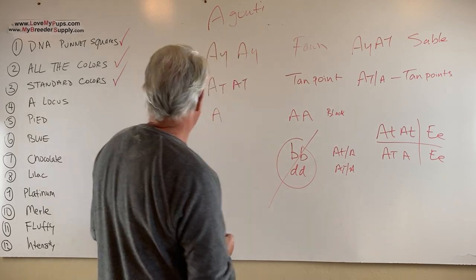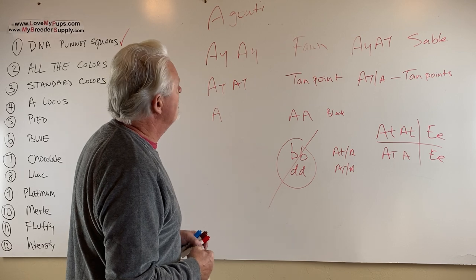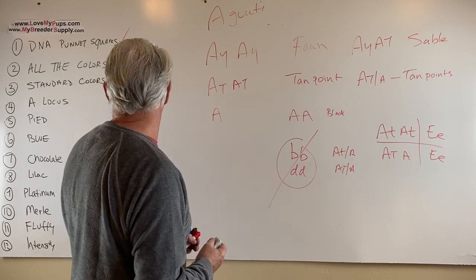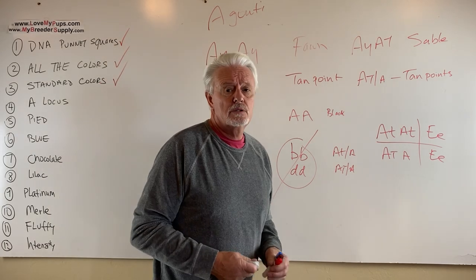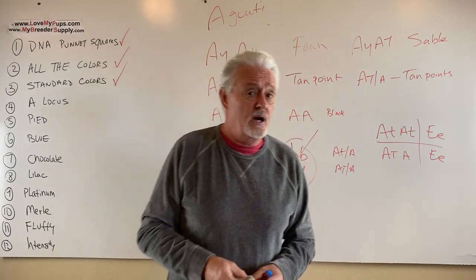Okay, so that's how you get a black and tan. I think I've probably covered this fairly well. So now I think we're going to move on to the pied next. Hey, thanks for watching. Subscribe to us if you like it. Bye everybody.